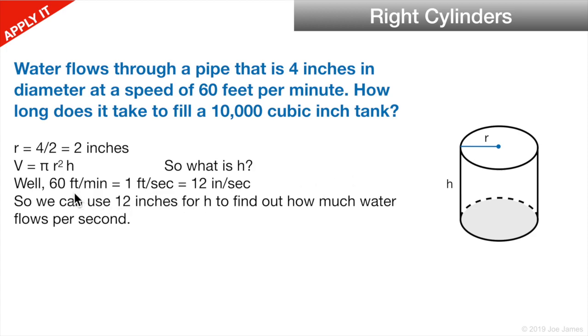At 60 feet per minute, that's 1 foot per second, or 12 inches per second. So if we take a snapshot of the flow of liquid through this pipe, in one second, what is the volume of this pipe? Well, 12 inches of water with a 2 inch radius, we can calculate that, and then we can say there's 12 inches flowing every second.